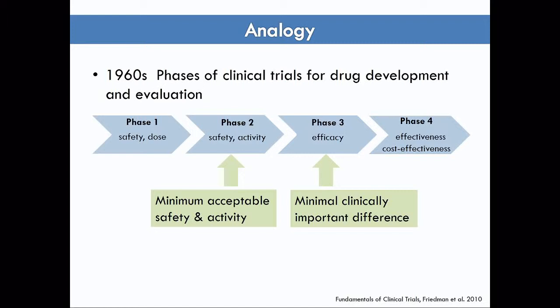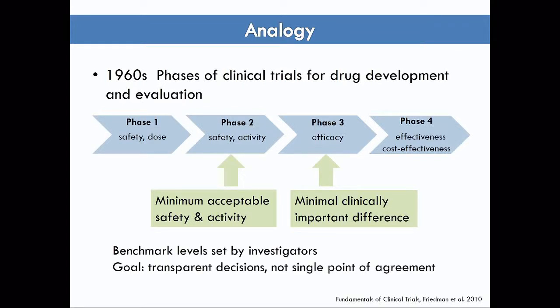The drug can then move forward to a randomised controlled trial to assess efficacy compared against state-of-the-art current practice, where the bar is set at a minimally clinically important difference. Evidence is provided to the regulatory agent to approve that drug on the basis of meeting that bar, then moving forward to broader assessment of effectiveness and cost-effectiveness, where there's another bar for reimbursement. My point in this analogy is that there's a benchmark set by investigators — not a magical single point of agreement, but a transparent bar.